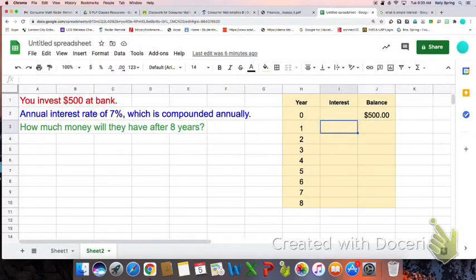Since I'm adding that interest annually, and since they are giving me the annual interest rate of 7%, then all I'm doing is taking 7% and multiplying it by my previous balance. So 7% times $500.